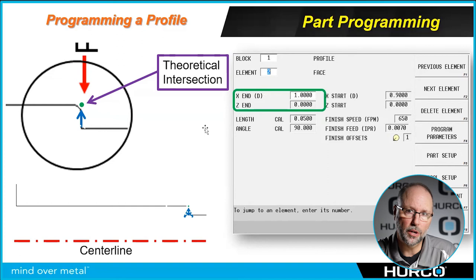We're going to do a face. When we program that face, we're going to go to the theoretical corner. We're going to end up turning a 1 inch diameter here, so we're going to move all the way up to 1 inch. We program to the theoretical corner or intersection.